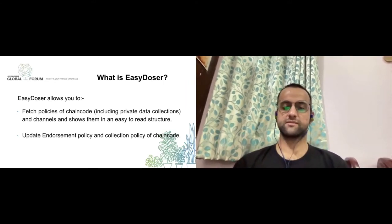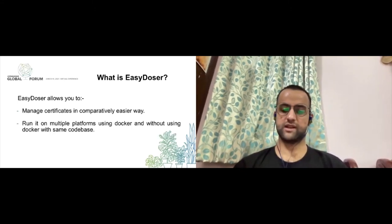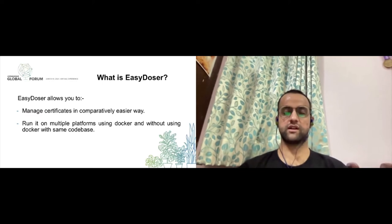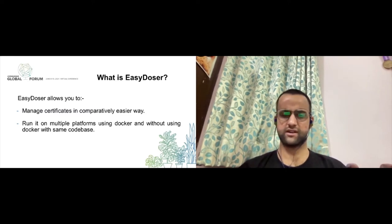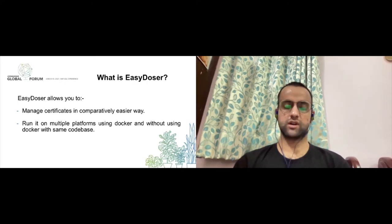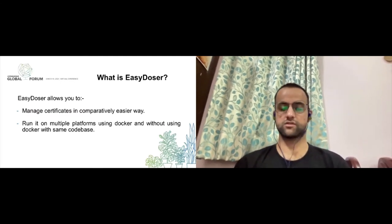You can also update the endorsement policies of the chain code. And you can match certificates in a comparatively easier way. If you were doing it the traditional way, you'd have to write long commands and put in a lot of different certificate paths, which gets quite tedious. Easy Dozer provides an easier way to do that as well. Lastly, it can run on multiple platforms — on Docker and without Docker, on a Linux machine, a Mac machine, or anything like that.